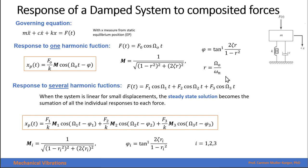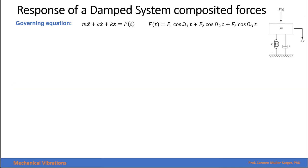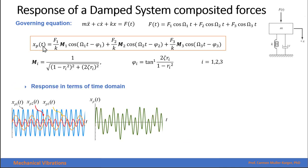The natural frequency is the same because it is a property of the system, and so is zeta, the damping ratio, but r varies with each force. Therefore, if we have this as our solution, we can see it as three different solutions that we add together to get the combined response. This response will be a function of the three amplitudes and the three frequencies of excitation.